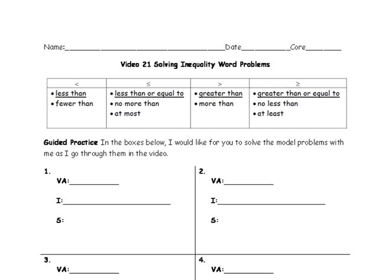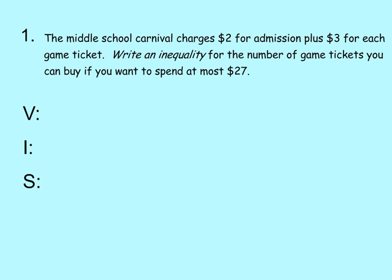So let's go ahead now and get started with practice problem number one. We are going to solve these the same exact way that we do equations when we set up word problems with equations. We are going to start with the question. It says write an inequality for the number of game tickets you can buy if you want to spend at most $27. From that question, we are going to pull out our variable assignment. Our variable assignment is going to be T is for number of tickets.